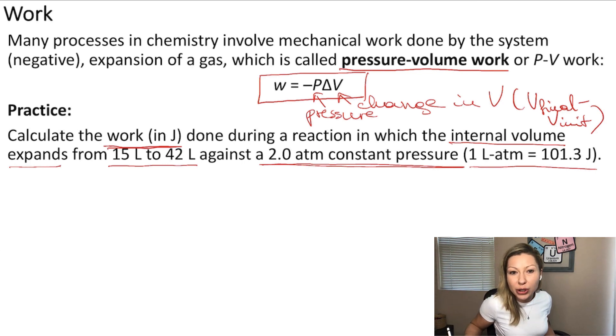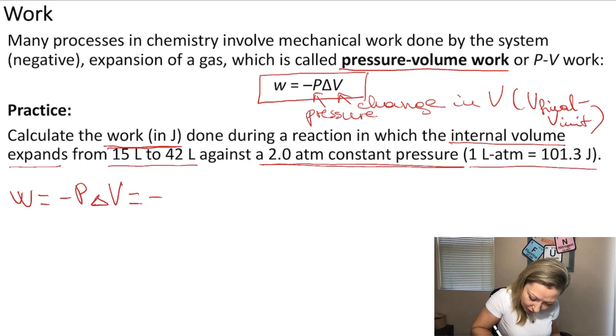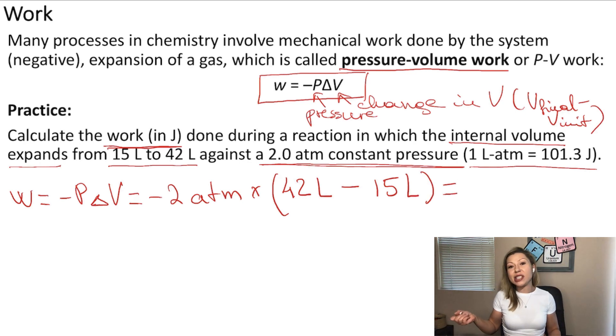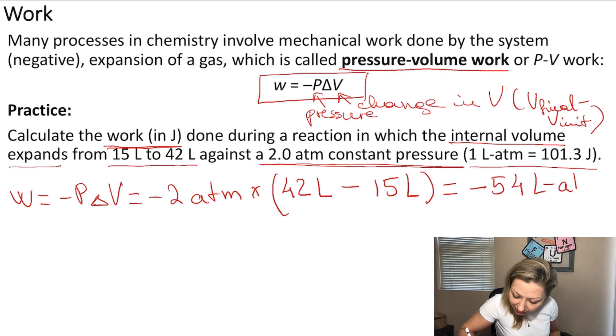So let's just simply plug our volumes into our formula. So the work equals minus P delta V, minus 2 atm multiplied by delta V, which is V final, so 42 liters, minus V initial, which is 15 liters. And if you do this calculation, you are going to arrive to minus 54 liter atm.